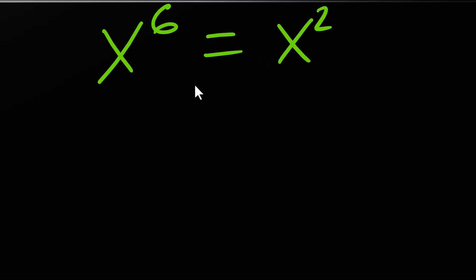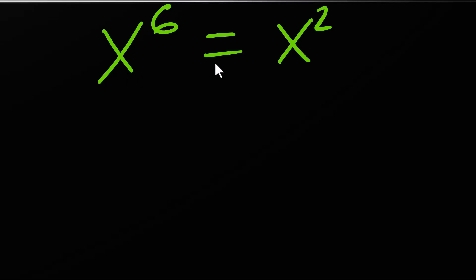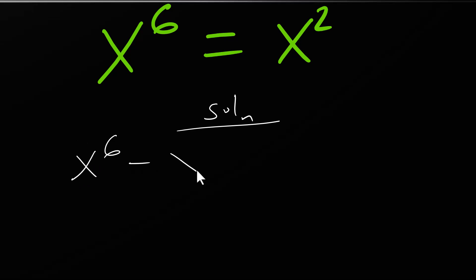Welcome to TTS Online Math. In my previous video I made a mistake when trying to express this as a difference of two squares, so let's do the correction. We have x to the power 6 equals x squared, so let me write this as x to the power 6 minus x squared equals zero.